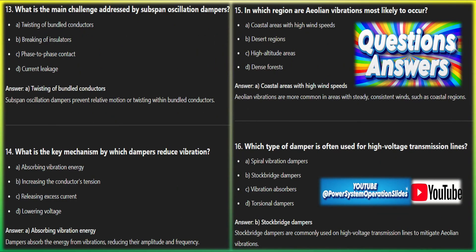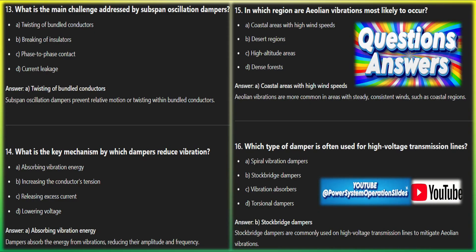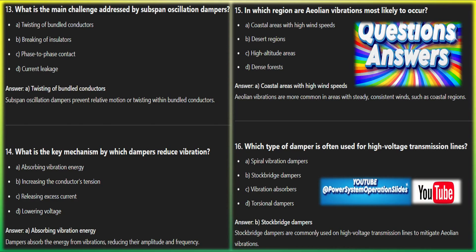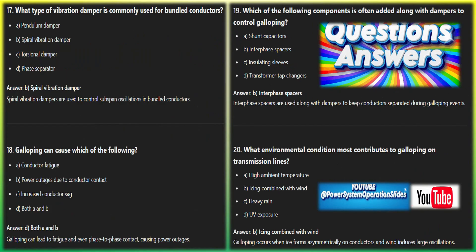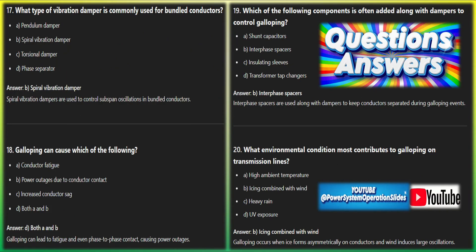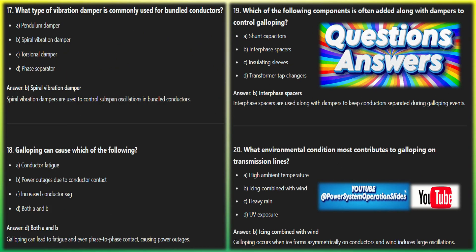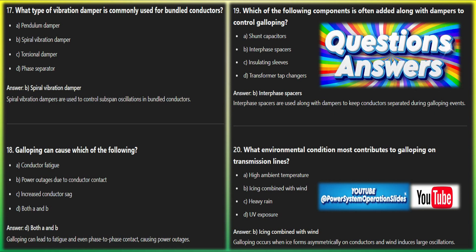Additionally, dynamic strain dampers reduce strain at critical points, viscoelastic dampers use materials to absorb energy, and rotational or torsional dampers address twisting motions. Self-damping conductors incorporate built-in damping properties to minimize external hardware. Each type is selected based on vibration type, conductor configuration, and environmental conditions, ensuring optimal performance and reliability of transmission lines. Proper installation and maintenance of these dampers are crucial for preventing fatigue, maintaining clearances, and enhancing the overall stability of power systems.